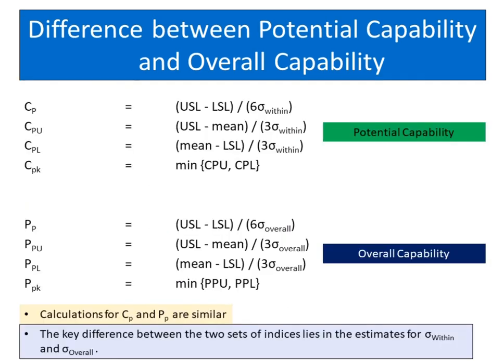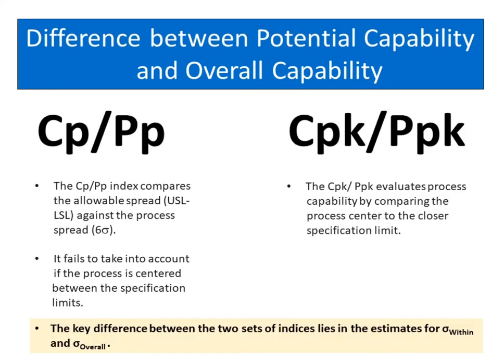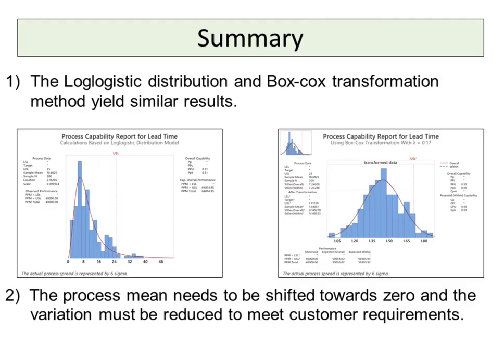The calculations for CP and PP are similar. The key difference between the two sets of indices lies in the estimates for within standard deviation and overall standard deviation. The CP-PP index compares the allowable spread, USL minus LSL, against the process spread, six sigma. It fails to take into account if the process is centered between the specification limits. The CPK-PPK evaluates process capability by comparing the process center to the closer specification limit. In summary, the log-logistic distribution and Box-Cox transformation method yield similar results. The process mean needs to be shifted towards zero and the variation must be reduced to meet customer requirements.